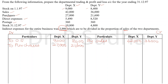Then direct expenses — direct expenses go to the trading account, so I am writing them here: 5,490 for X and 8,520 for Y. Postage is an administrative expense and will go to the P&L account. Then closing stock is recorded on the credit side of the trading account: for X it is 10,800; for Y it is 4,800.